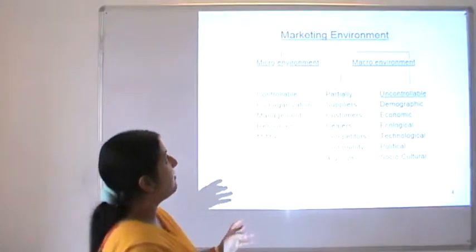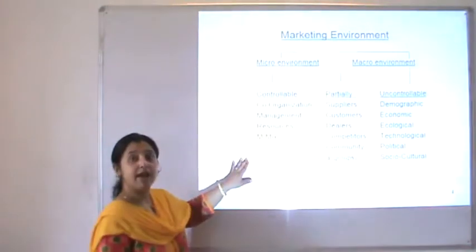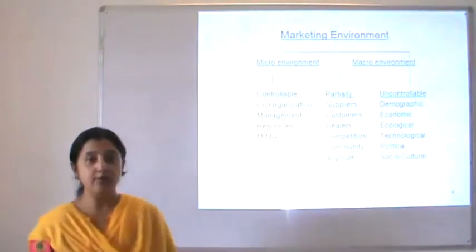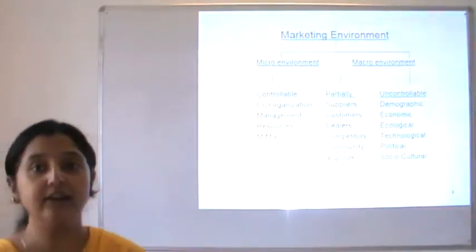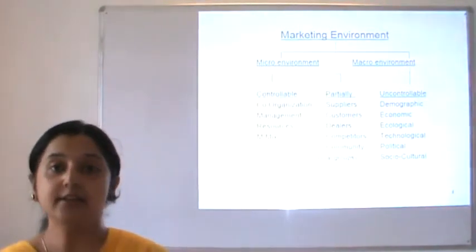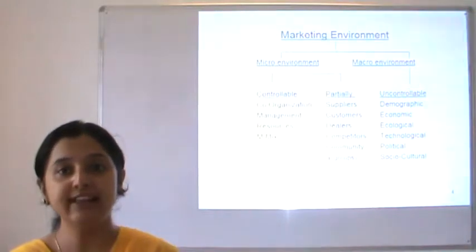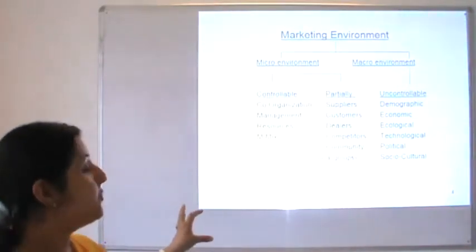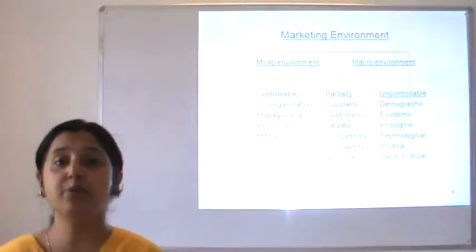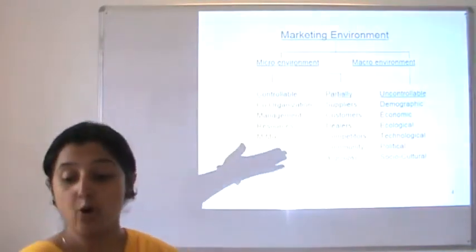The entire marketing environment can be broadly classified into two factors: micro environmental factors and macro environmental factors. Micro environmental factors can be classified into two types — controllable and partially controllable — whereas macro environmental factors can be broadly classified into one category: uncontrollable. There are certain factors for which businesses have the capability of molding or controlling them to a certain extent. These are the ones existent within the organization, known as internal factors, whereas factors beyond the control of the organization are totally uncontrollable and known as broad external environmental factors.